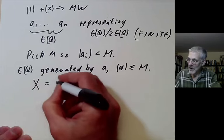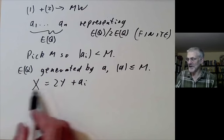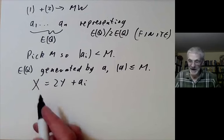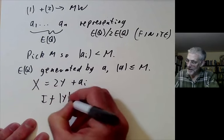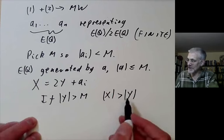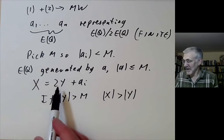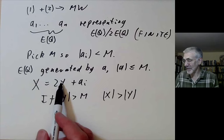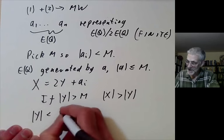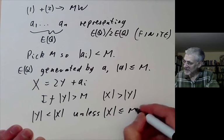We're going to show that E(Q) is generated by the points A of length at most M. This argument is very easy. Suppose we've got any point, then we can write this point x as 2y plus some Ai. This is just saying that the Ai's are a set of representatives for the curve modulo 2 times the curve. Now we notice that if y has length greater than M, then x has length greater than y because A has length at most M and 2y is going to have length at most the length of x plus the length of Ai.